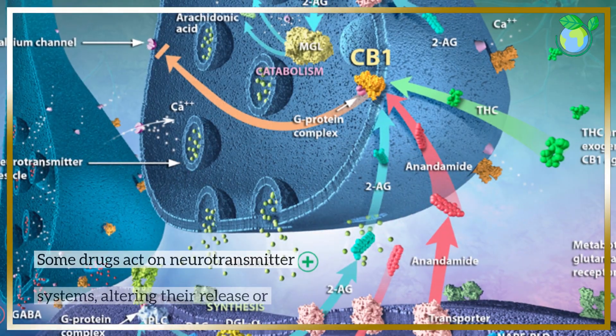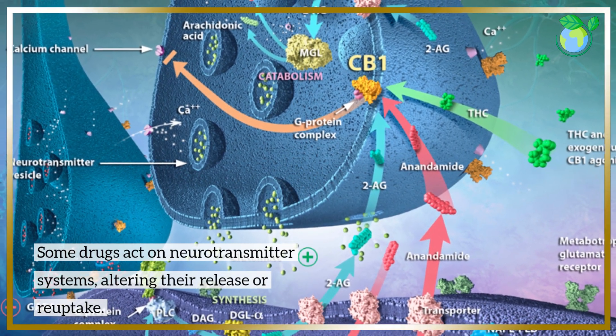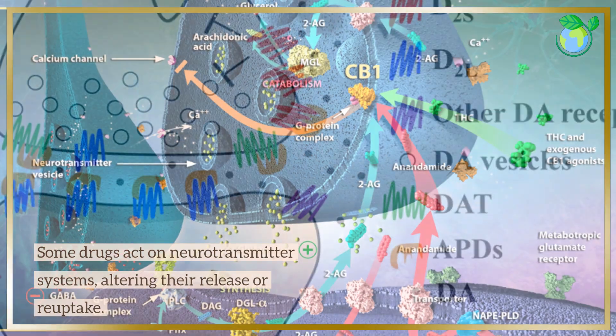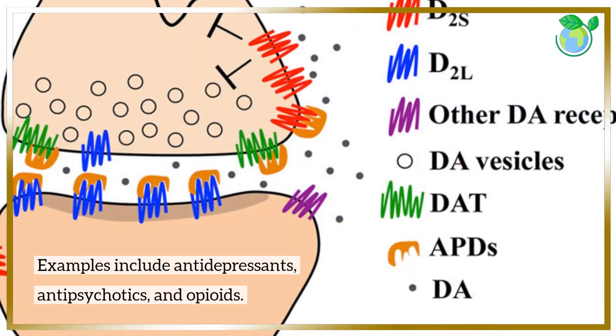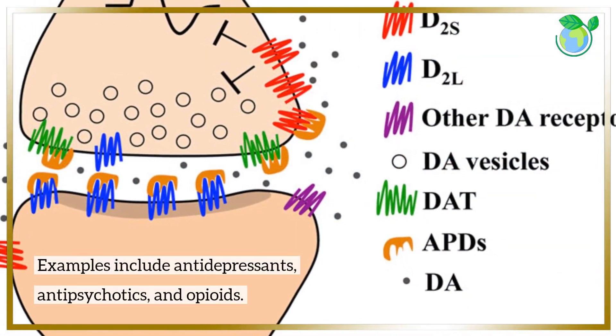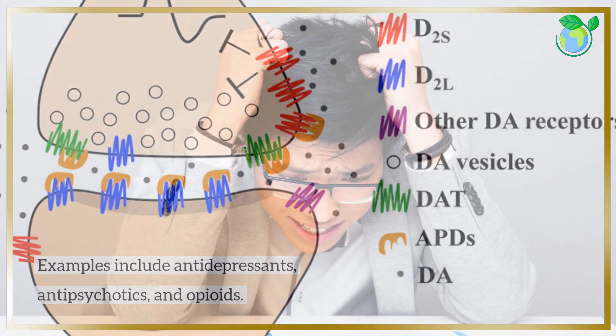Some drugs act on neurotransmitter systems, altering their release or reuptake. Examples include antidepressants, antipsychotics, and opioids.